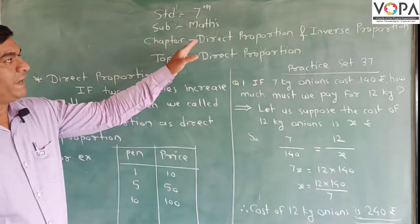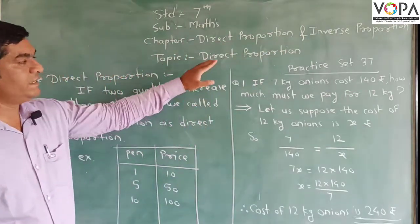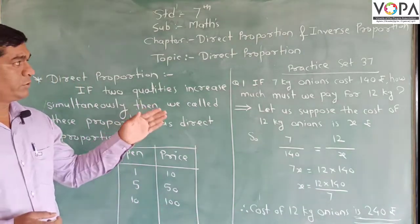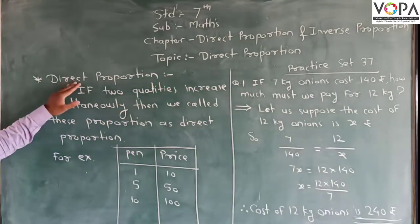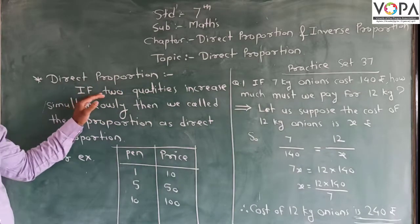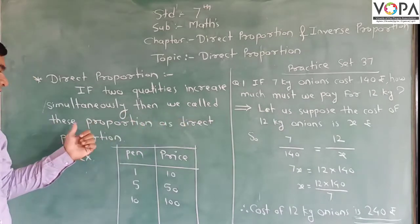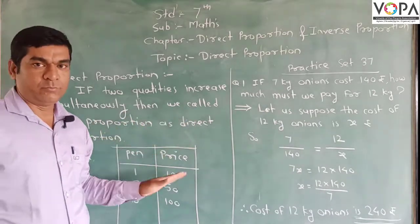From direct proportion to inverse proportion, the topic of today is direct proportion. First, we will find out the meaning of direct proportion. What is the meaning of direct proportion? Direct proportion means if two quantities increase simultaneously, then we call this proportion as direct proportion.